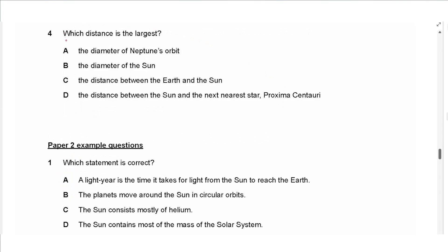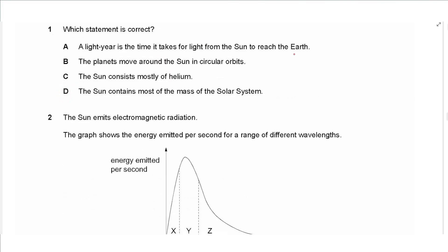The next question says, which distance is the largest? The diameter of Neptune's orbit, the diameter of the sun - the diameter of the sun is actually much smaller than the orbit of Neptune. The distance between the Earth and the sun is between these two values. The distance between the sun and the next nearest star, that's actually much further away than all of these choices. This is outside the solar system, so this is the largest one.